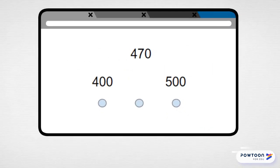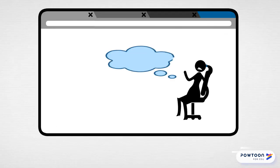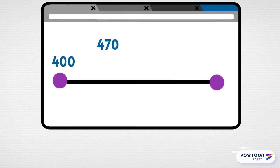Let's take a look at the problem that has 470 on top and 400 and 500. What they're asking you is if 470 is closer to the 400, the 500, or right in the middle. The best thing to do when you have a problem like that is to think of a number line. A number line is the best way to figure out whether the number you're looking at is closer to one number or another. Our number is 470, and I have to figure out whether that's closer to 400 or closer to 500.